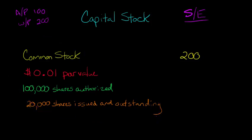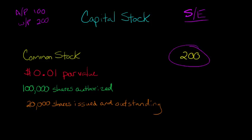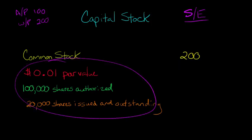You see common stock or preferred stock, you see a par value — you're wondering what that is — shares authorized, issued, outstanding, and you've got basically a bunch of words and all these things that make it a little bit more complicated than what you see on the right, which is just a number. And you're wondering maybe how do they get that $200, and what do all these words over here mean?